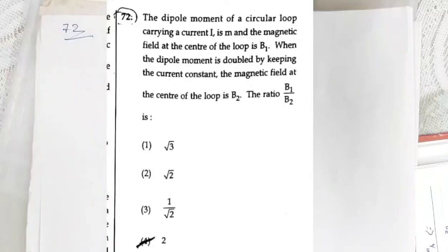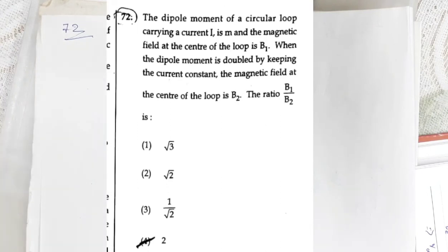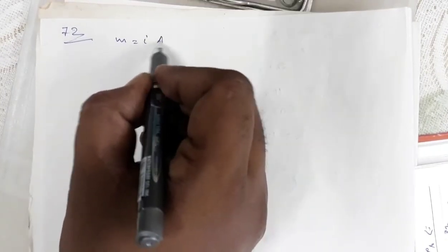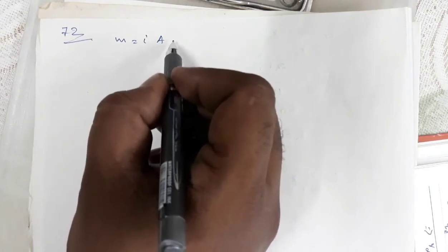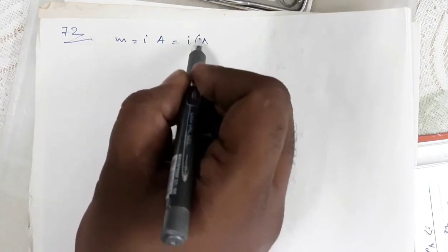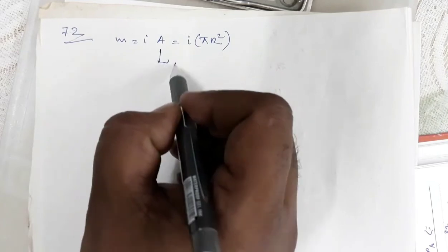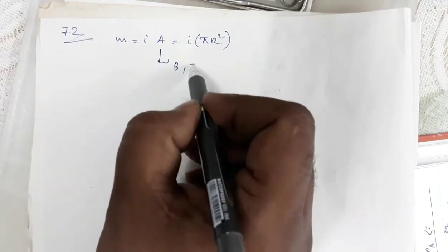Question number 72 states that the dipole moment of a circular loop carrying current i is m, and the magnetic field at the center is b1. The dipole moment m = i·A = i·πr². The magnetic field at the center of the circular loop is b1 = μ₀i/(2r).